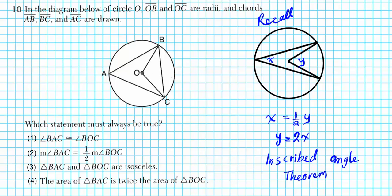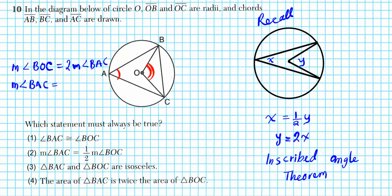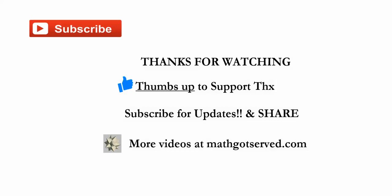If the inscribed angle is x and the central angle is y, then x equals one-half of y, or equivalently y equals double x. In this setup, the inscribed angle is angle BAC and the central angle is angle BOC. So the measure of angle BOC equals double the measure of angle BAC, or the measure of angle BAC equals one-half the measure of angle BOC. Looking at the options, the correct answer is option number 2.